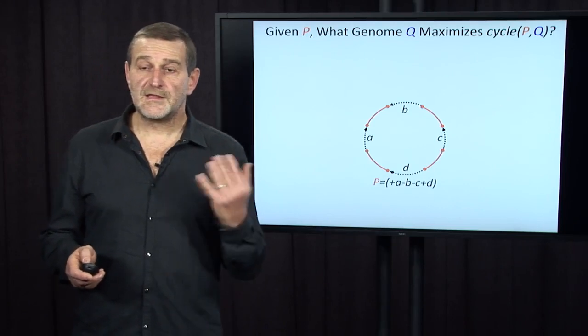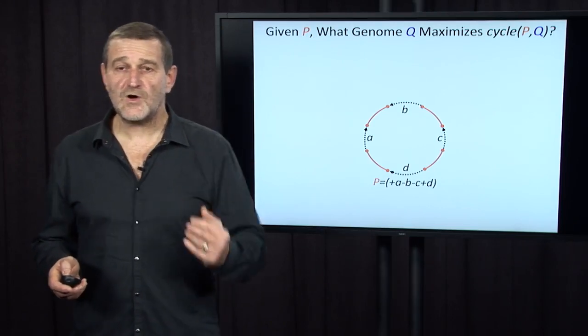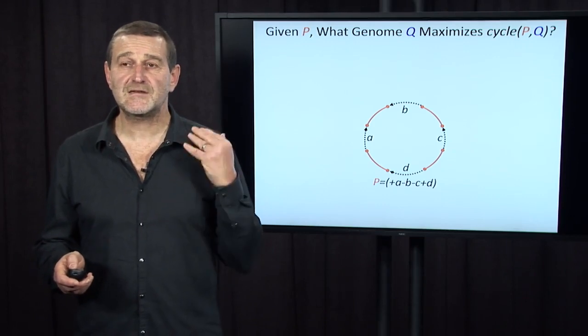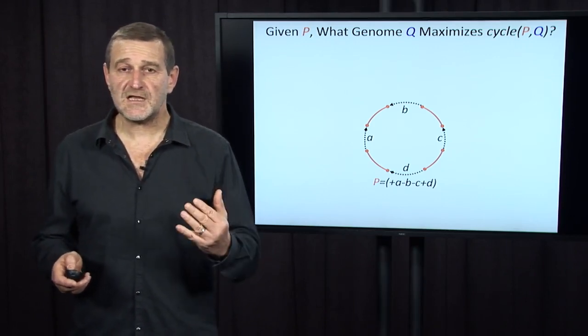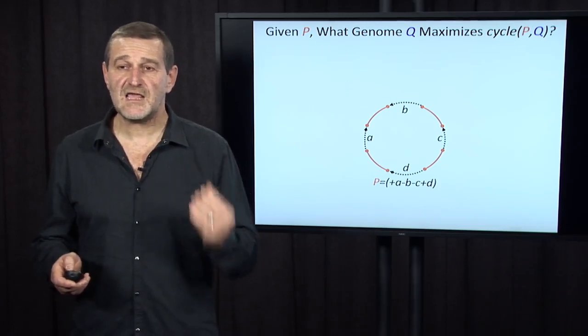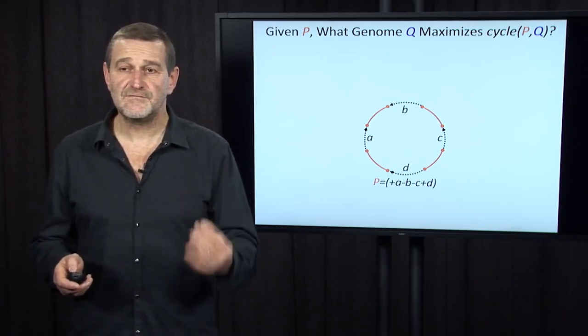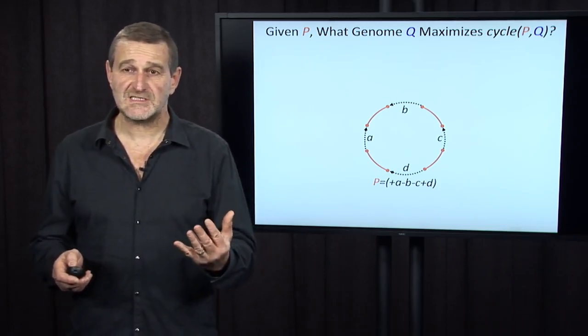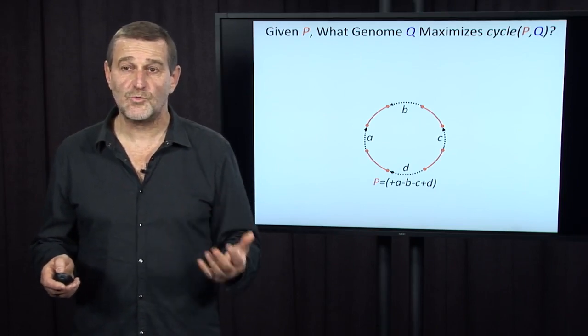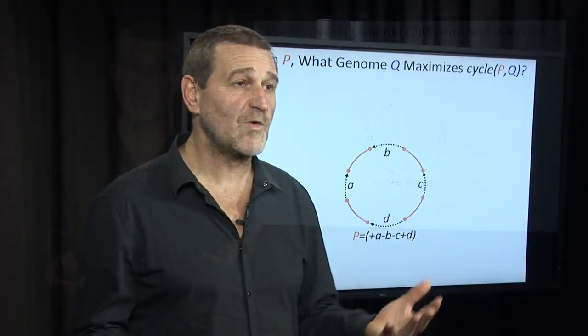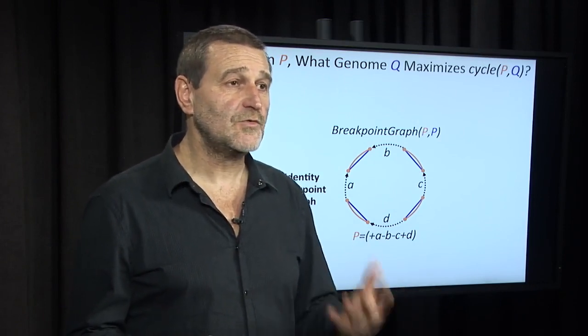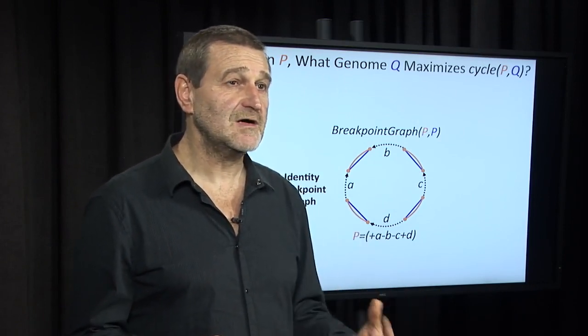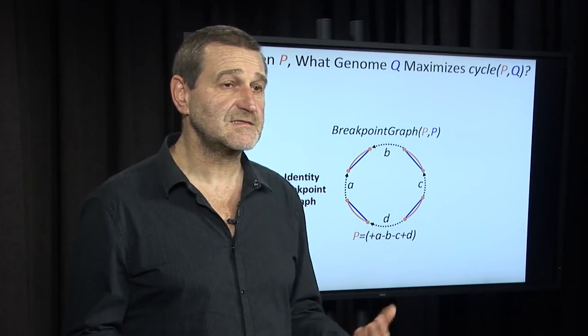Now, given genome P, I want to ask you: what is the genome Q that maximizes the cycle number? Well, the cycle number will be maximized if every cycle will be small. And the shortest cycle consists of just two edges, one red edge and one blue edge. Which means, this is the breakpoint graph with the maximum number of alternating cycles.